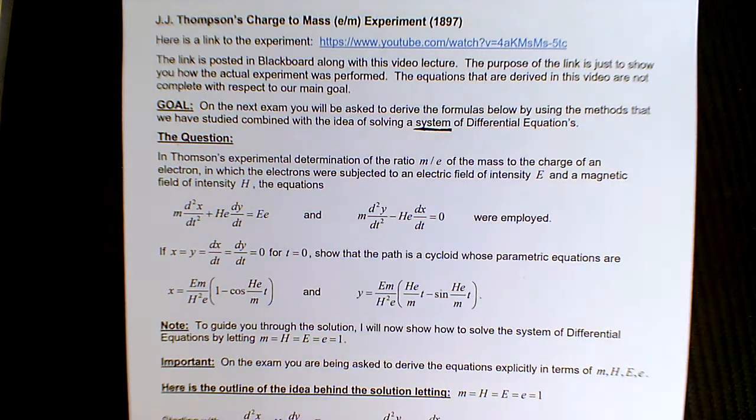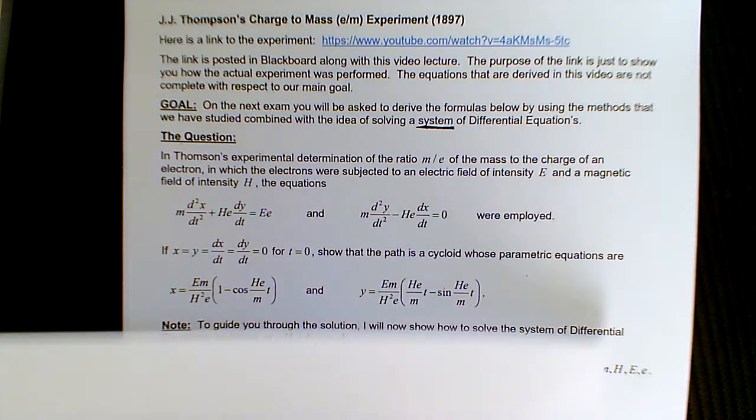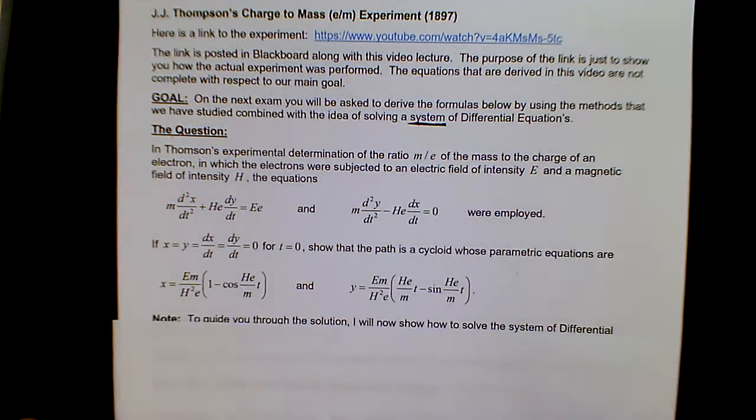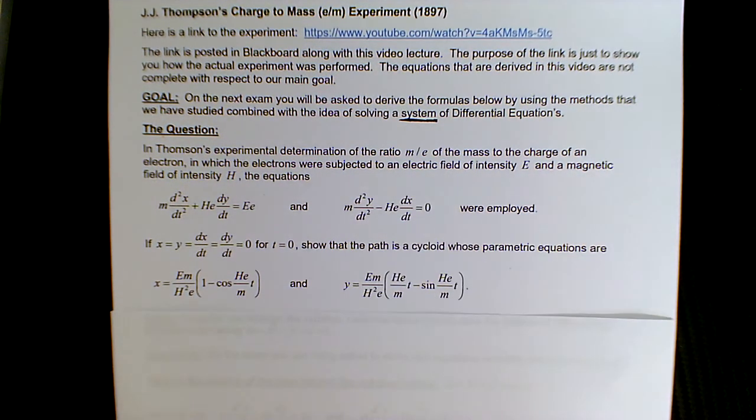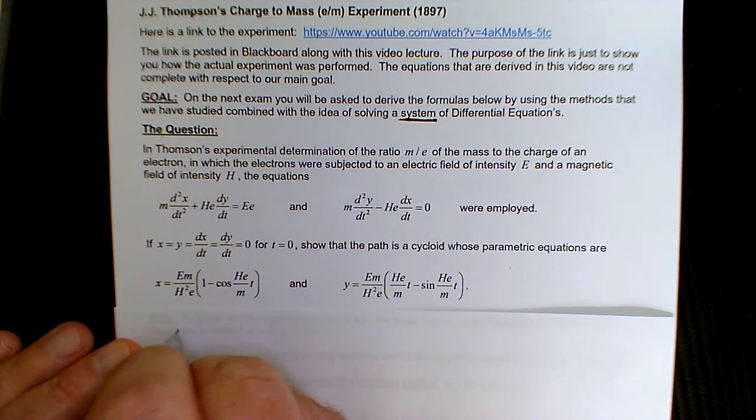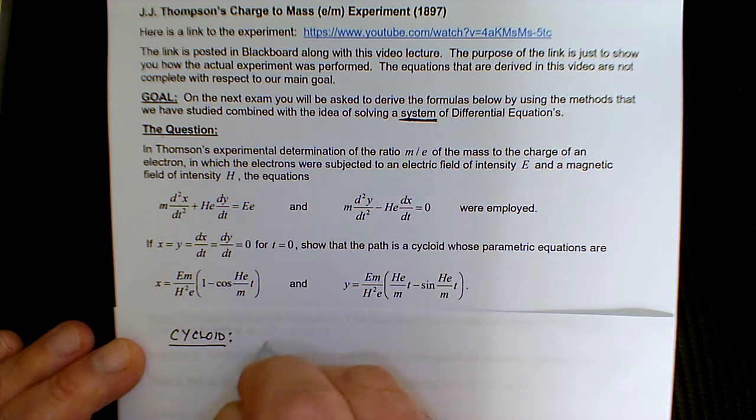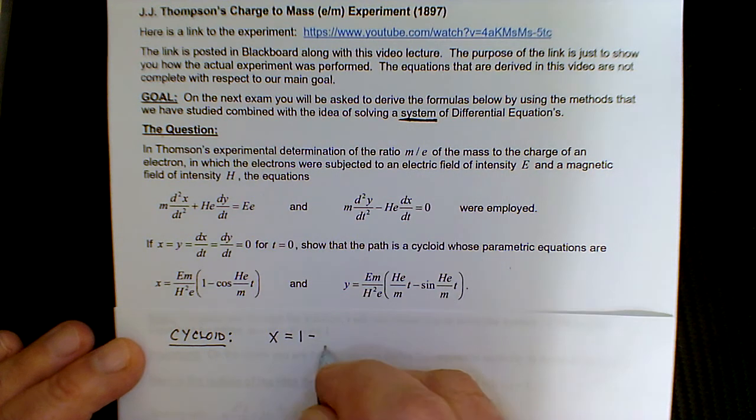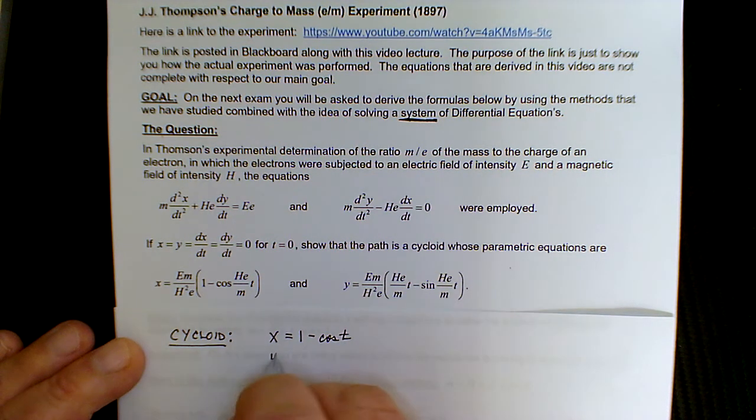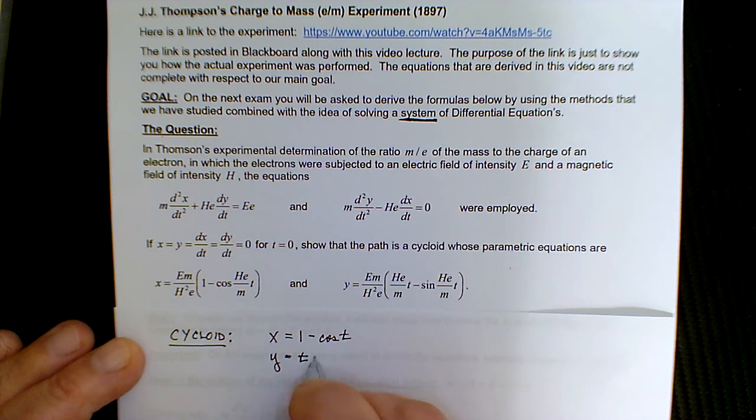Now, regarding the cycloid, I took out another sheet of paper here just to mention briefly about the cycloid. We're not going to derive the equations for the cycloid. But your general cycloid has the equations x equals 1 minus cosine t and y equals t minus sine of t. So those are the two general equations for the cycloid.